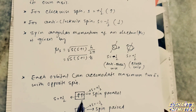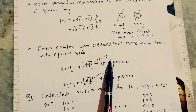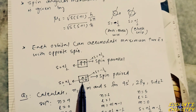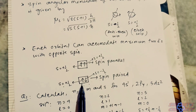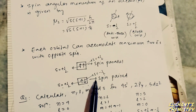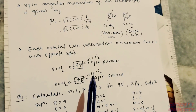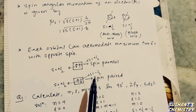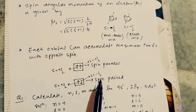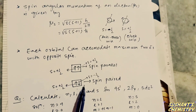When two electrons are present in the same spin direction, it is called spin parallel — for both electrons s equals plus half, giving a net spin of one. When two electrons are in opposite spin directions, it is called spin paired — one electron has s equals plus half and the other s equals minus half, giving a net spin of zero. An orbital can contain a maximum of two electrons in opposite spins to avoid electron repulsion.